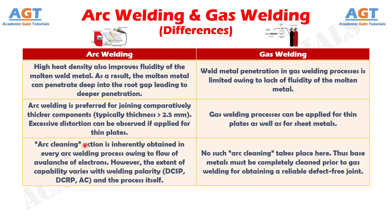Difference number 12. The arc cleaning action is inherently obtained in every arc welding process owing to the flow of an avalanche of electrons; however, the extent of capability varies with welding polarity and the process itself, whereas no such arc cleaning takes place in gas welding.